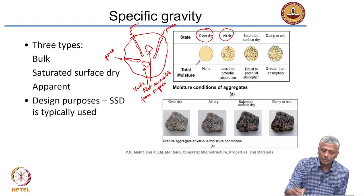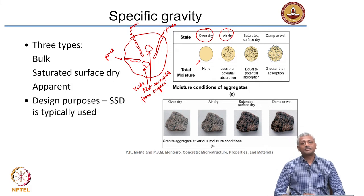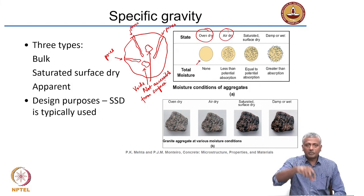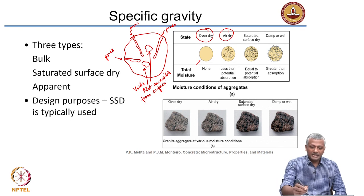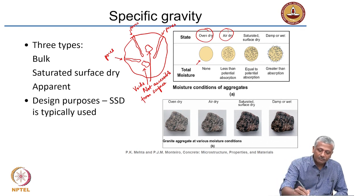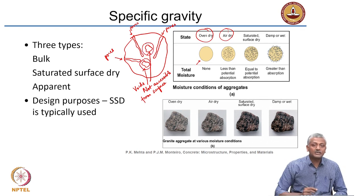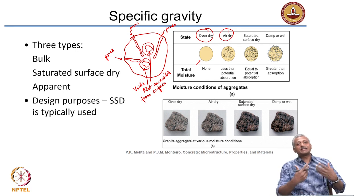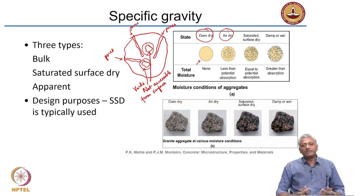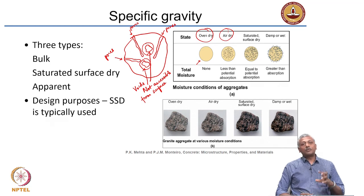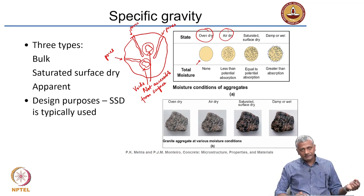Why is it important to classify the porosity or voids like this? Because when I wet this aggregate by putting it into water, the voids which are inside and inaccessible from the surface will obviously never get filled up with water. Whereas all the ones which have open porosity on the surface will get filled up with water.